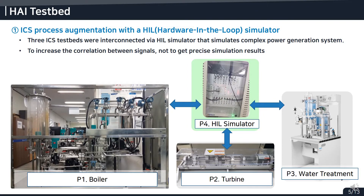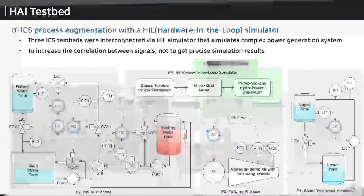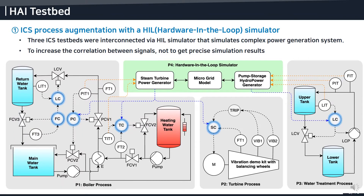Let's look at process augmentation with the hardware-in-the-loop simulator. Three real-world testbeds were interconnected by a HIL simulator. The HAI testbeds consist of six process controllers on three industrial controllers. The boiler process controlled by Emerson Ovation DCS has four controllers for water level, pressure, flow rate, and temperature. The turbine process controlled by GE Mark VIe DCS has only a speed controller. The water treatment process controlled by GE Mark VIe DCS has water level control. Finally, the HIL simulator emulates two synchronized power generators with a microgrid model. It enhances the correlation between signals, not to get precise simulation results.